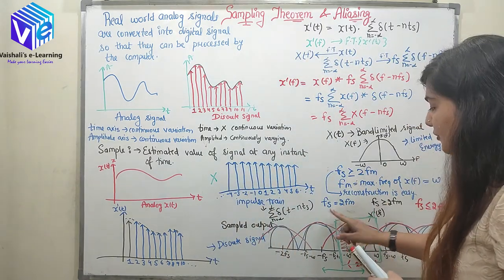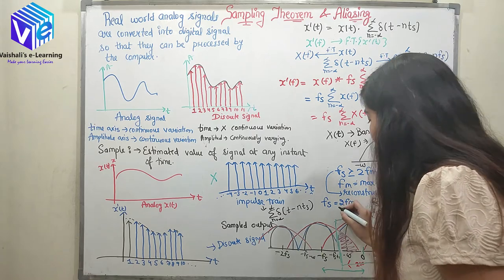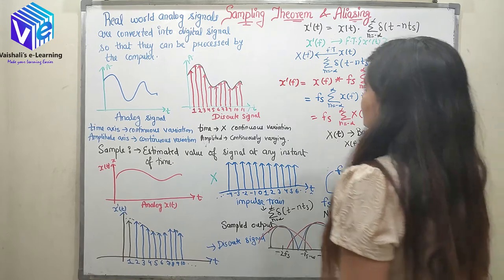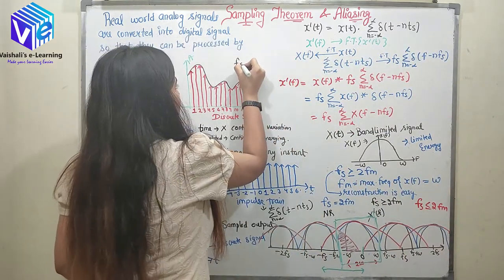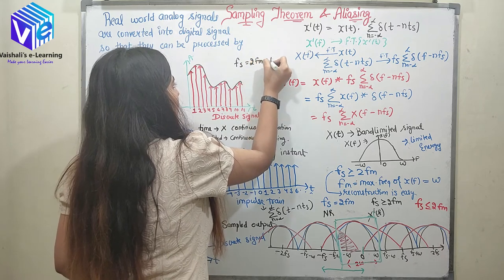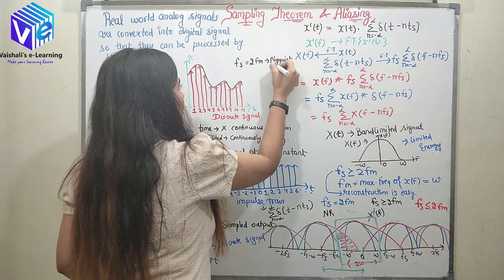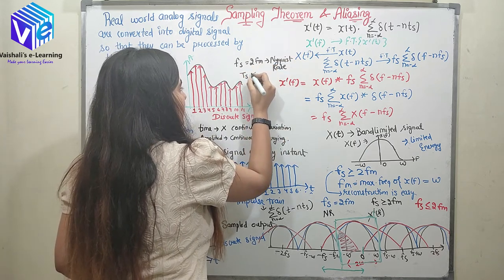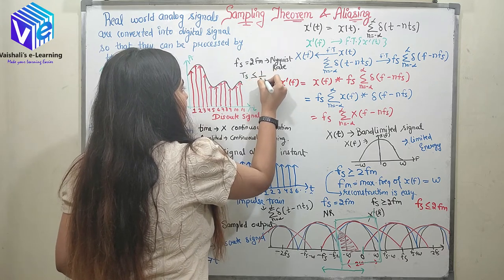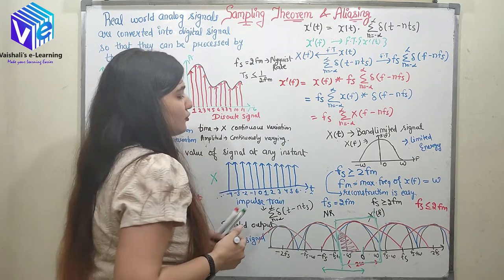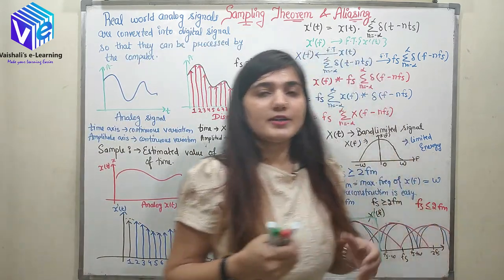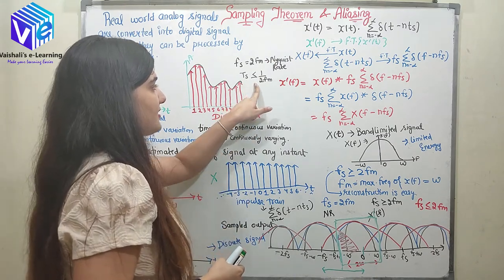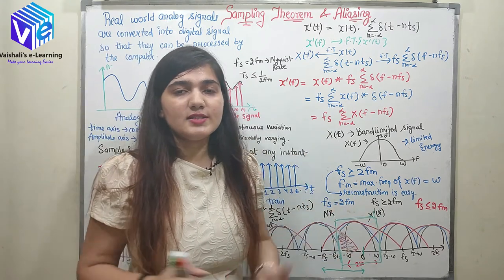This ideal frequency is called the Nyquist rate. When Fs equals 2Fm, I will call it the Nyquist rate. If I want to represent it in terms of Ts, then Ts should be less than or equal to 1 upon 2Fm. Now I hope you understood what is the Nyquist rate. This also represents the Nyquist interval — if I take Ts equal to 1 upon 2Fm, it represents the Nyquist interval.